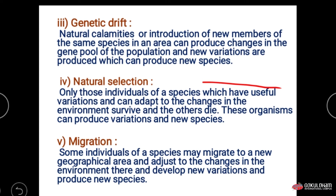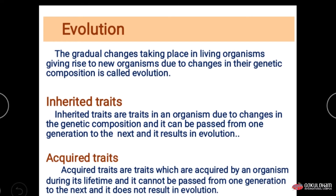The next factor is migration. Some individuals of a species may migrate to a new geographical area and adjust to the change in the environment. They produce certain variation, and this variation later produces new species.